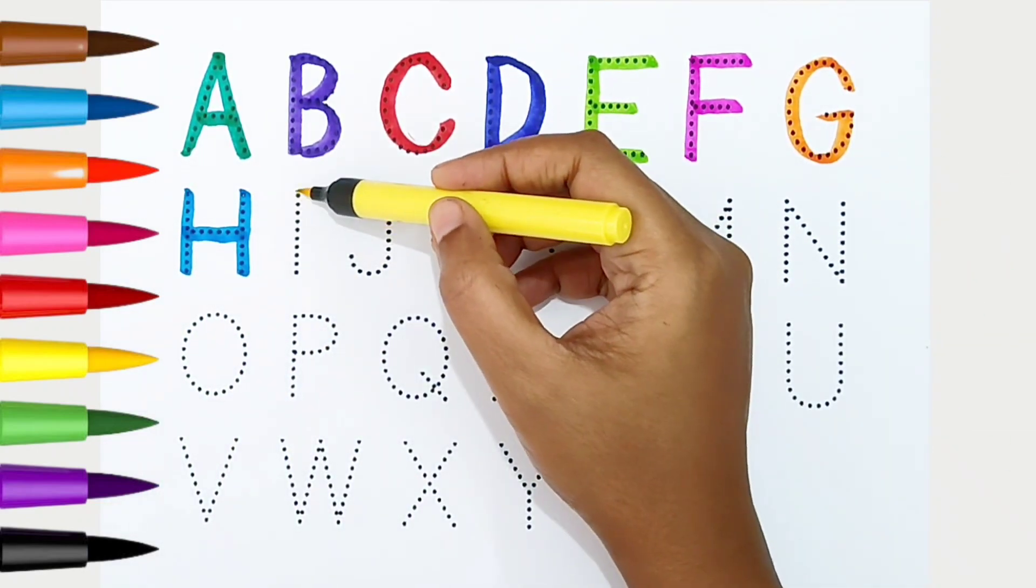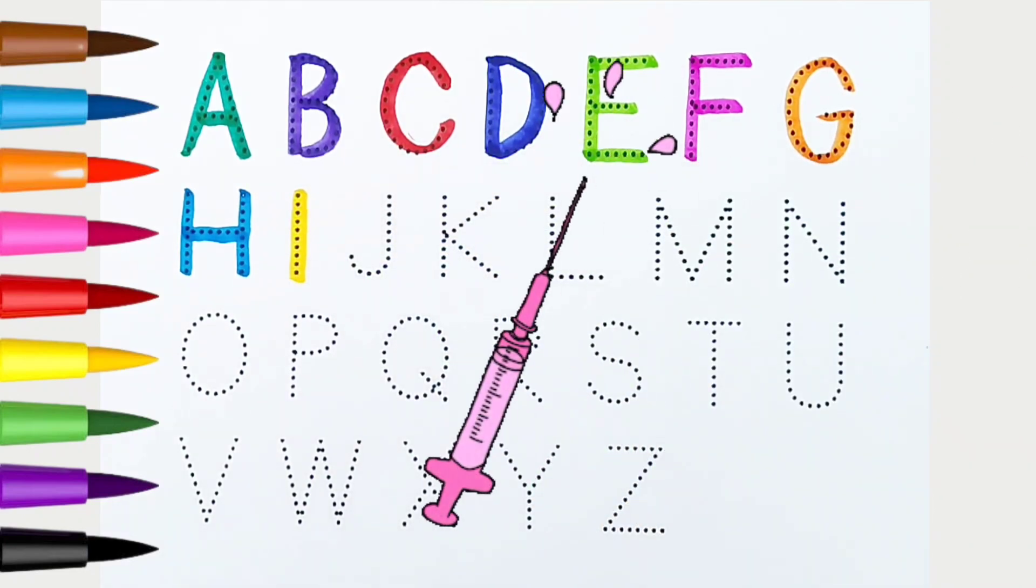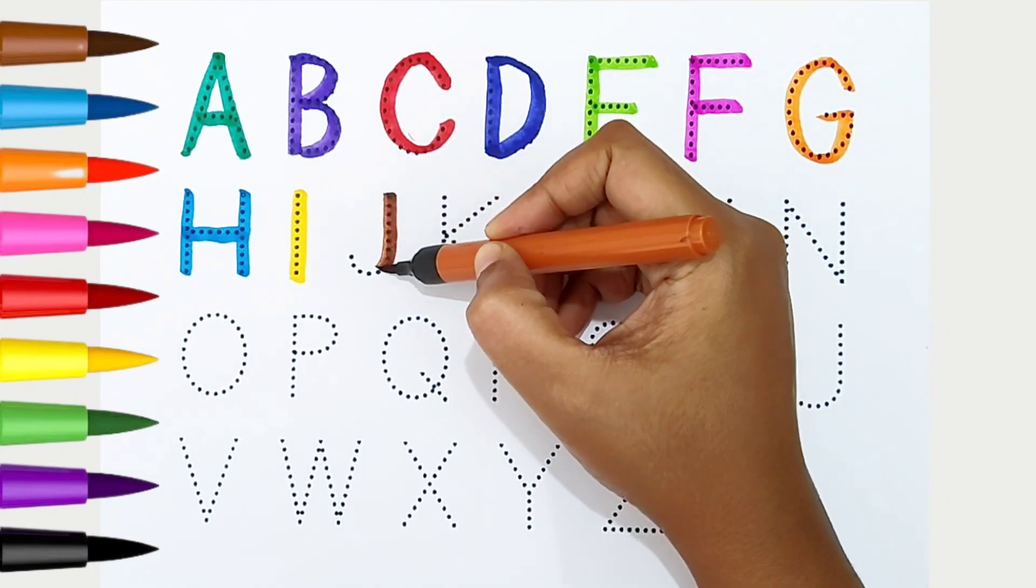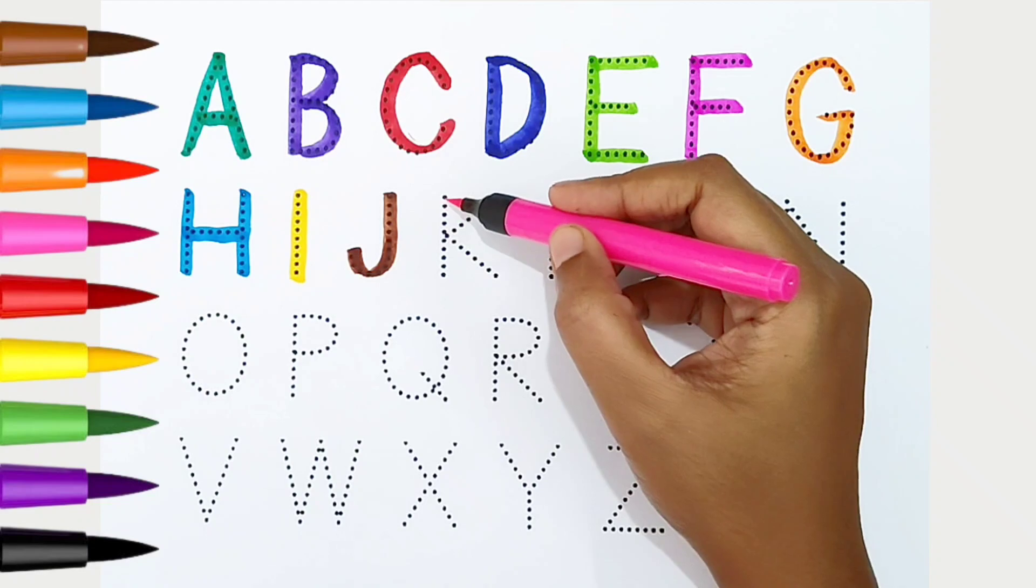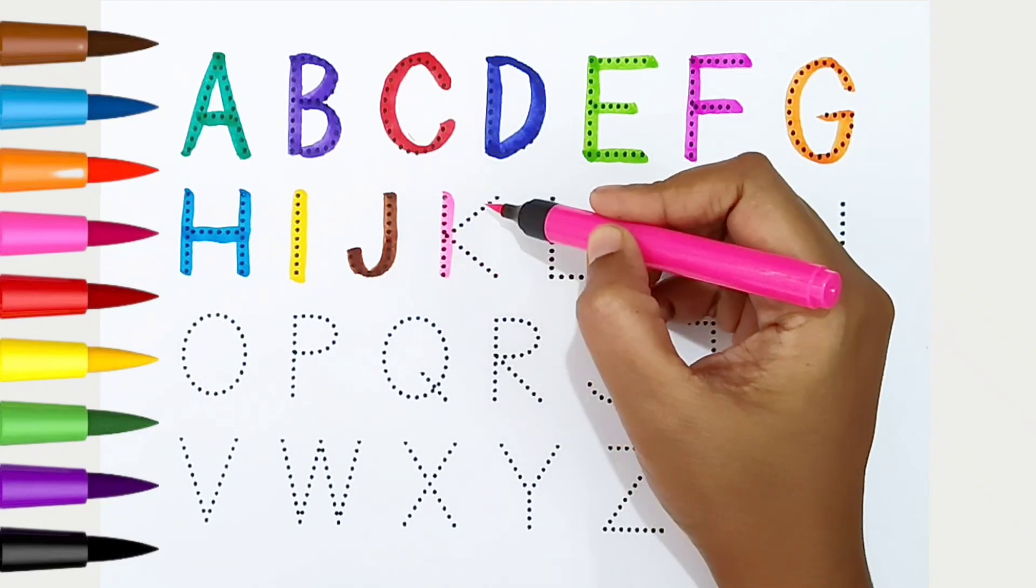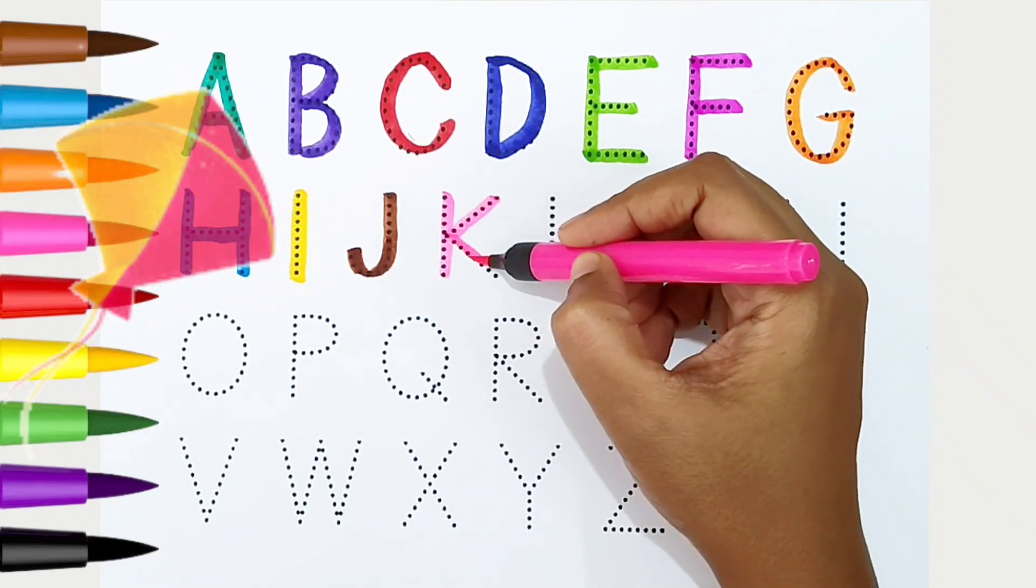I, yellow color. I is for injection. J, brown color. J is for jaguar. K, light pink color. K is for kite.